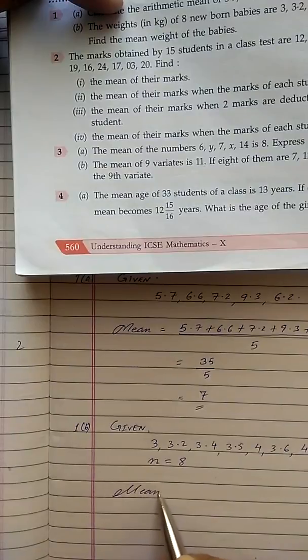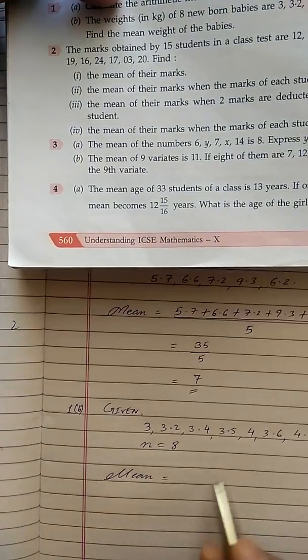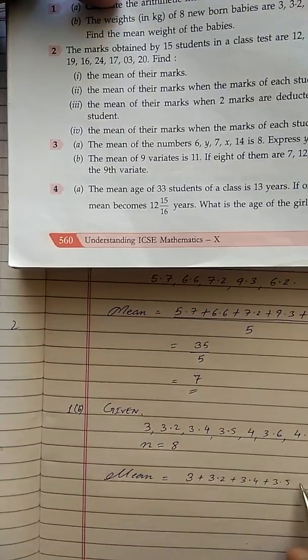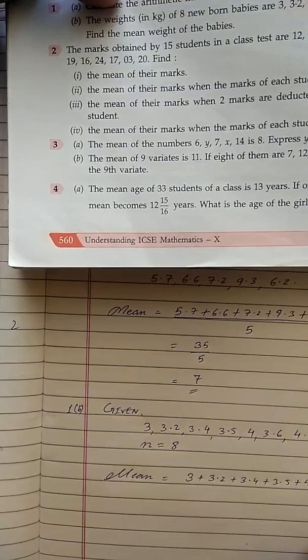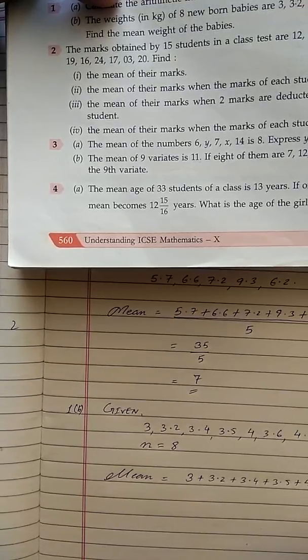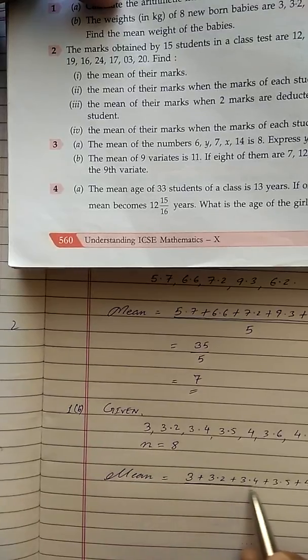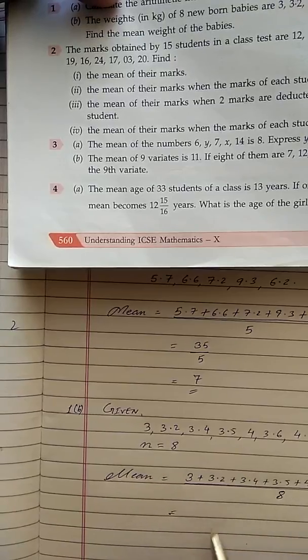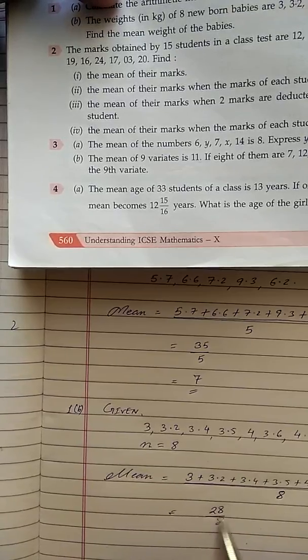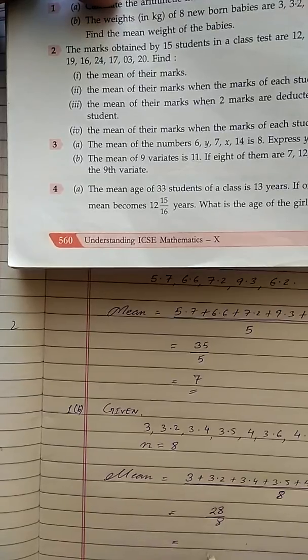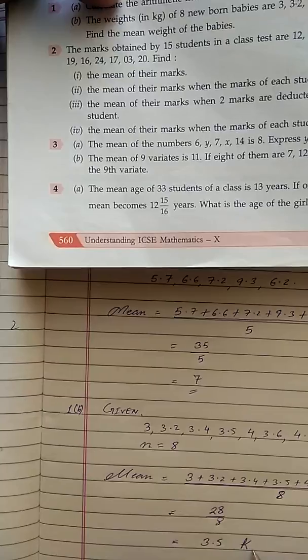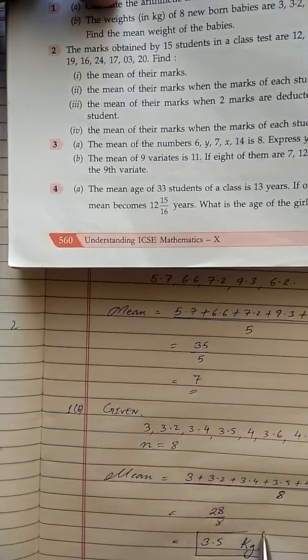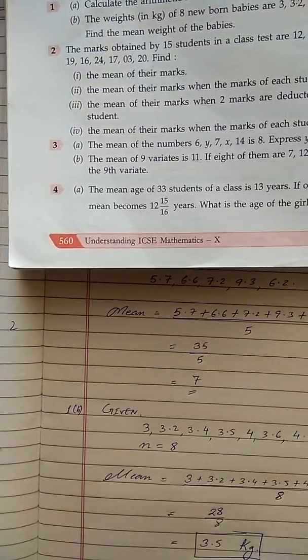In order to find the mean, we are going to first find the sum of all these variants: 4 plus 3.6 plus 4.1 plus 3.2, and divide the entire sum by the number of variants. If we add all this, we get 28 divided by 8. Dividing 28 by 8, we get 3.5. Since the weight is mentioned in kg, the answer will also have kg. So 3.5 kg is the mean or average weight of the newborn babies.